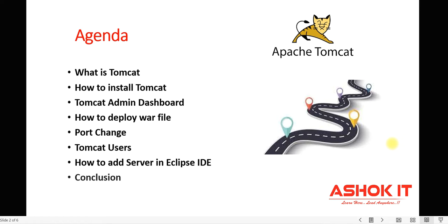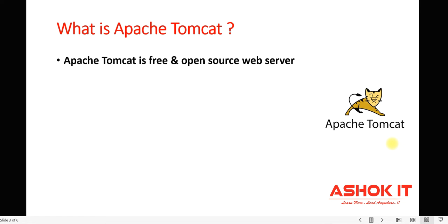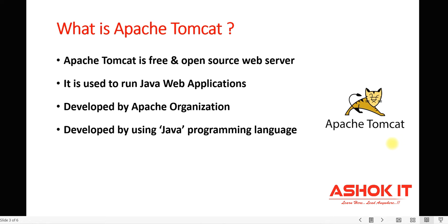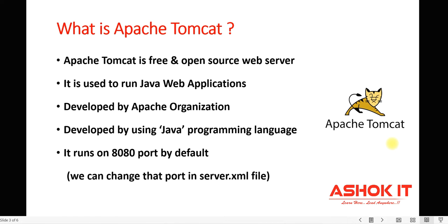We will also cover how to add the server in Eclipse IDE for quick deployments. Tomcat is a free and open source web server used to run Java web applications. Every web application should be deployed inside a server for execution. Apache Tomcat is one of the most famous web servers for Java web applications. It uses 8080 as the default port number, but we can change that port number.